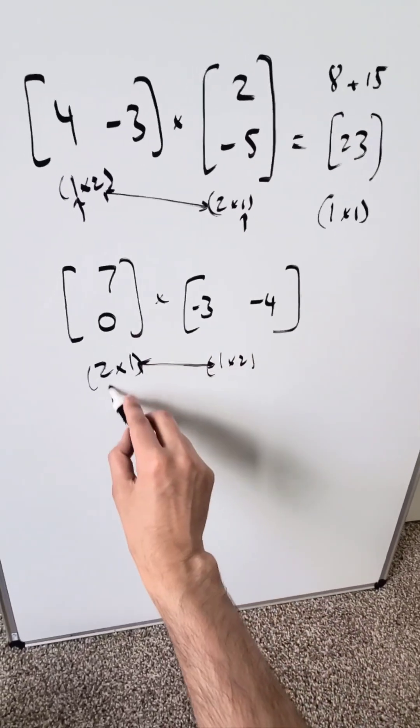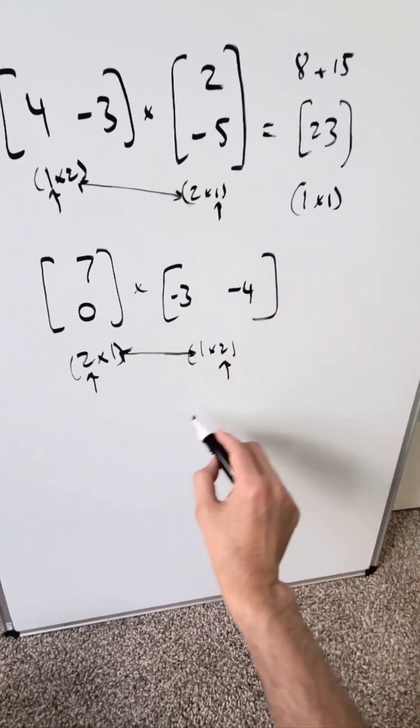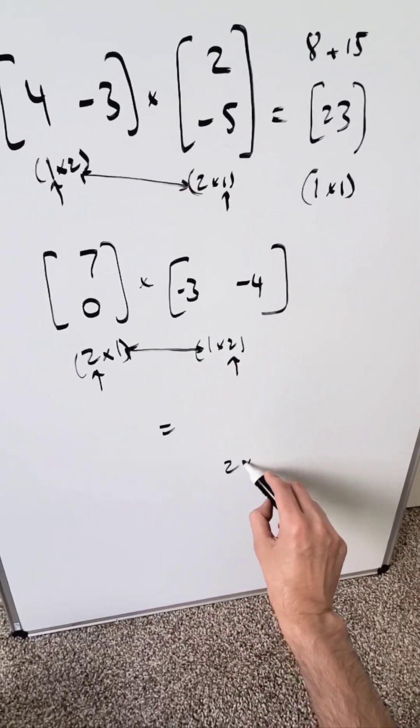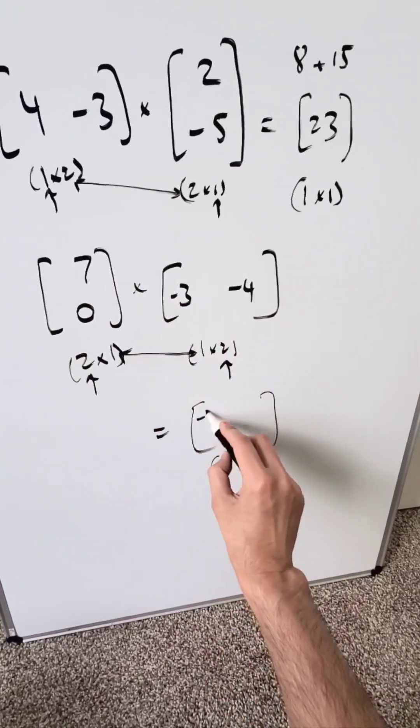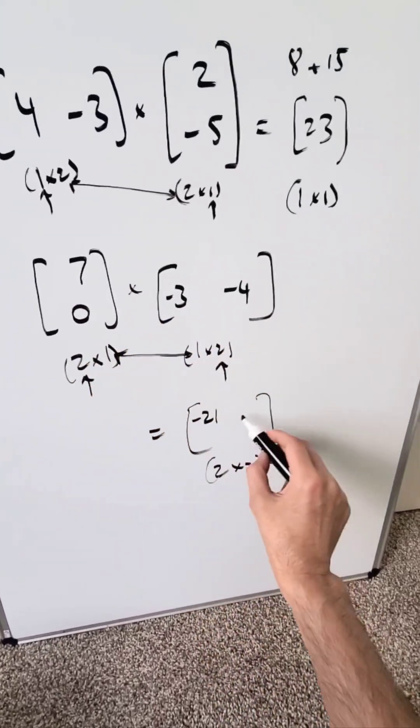The inner two numbers are indeed good, so we can do the computation. We are looking here at an end result which would be a 2 by 2 matrix, meaning 4 items. And what would they be? 7 times minus 3, minus 21. 7 times minus 4, minus 28.